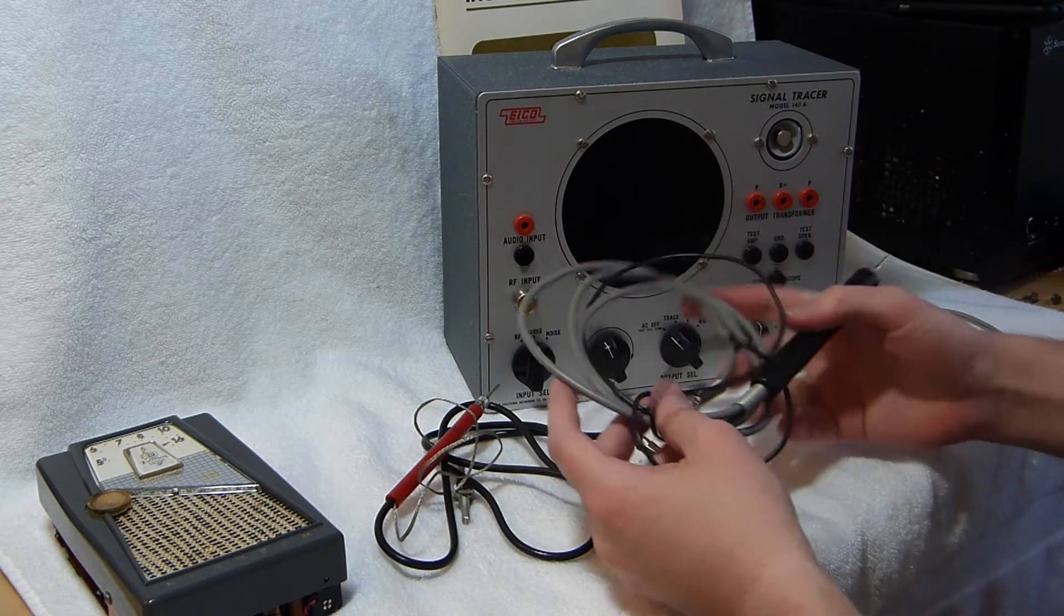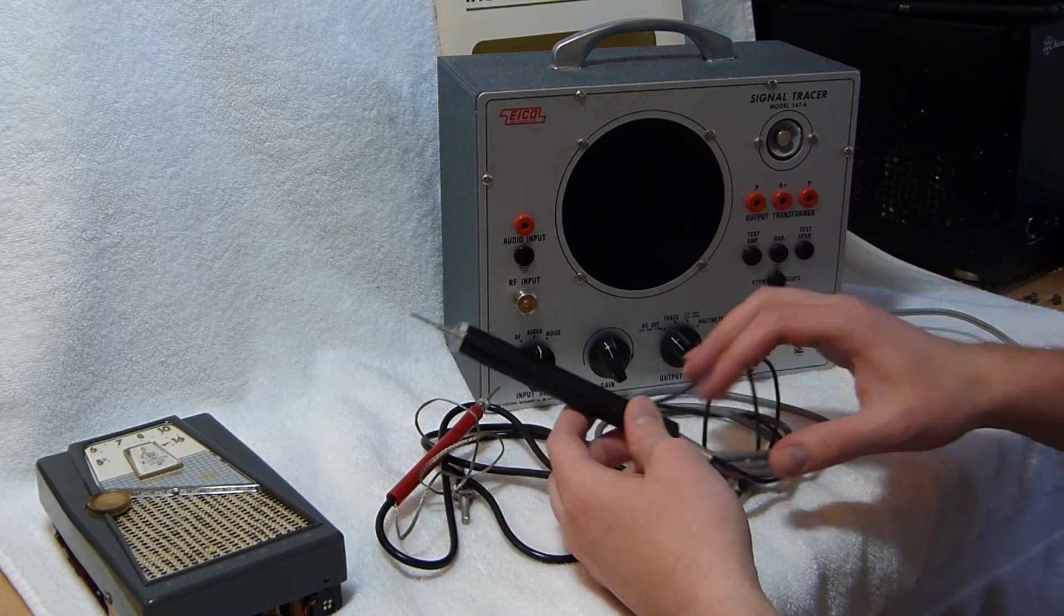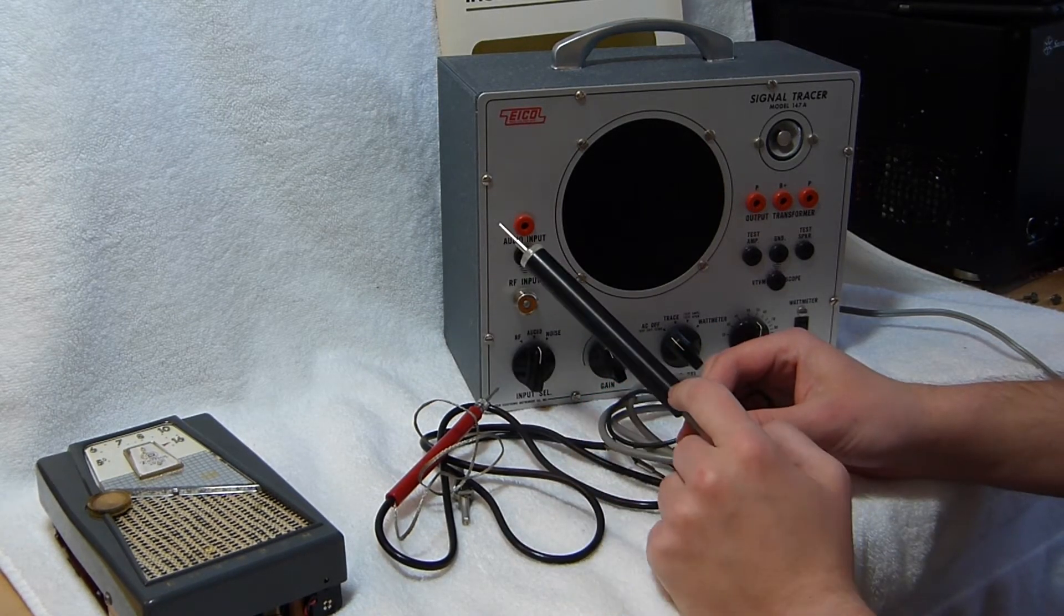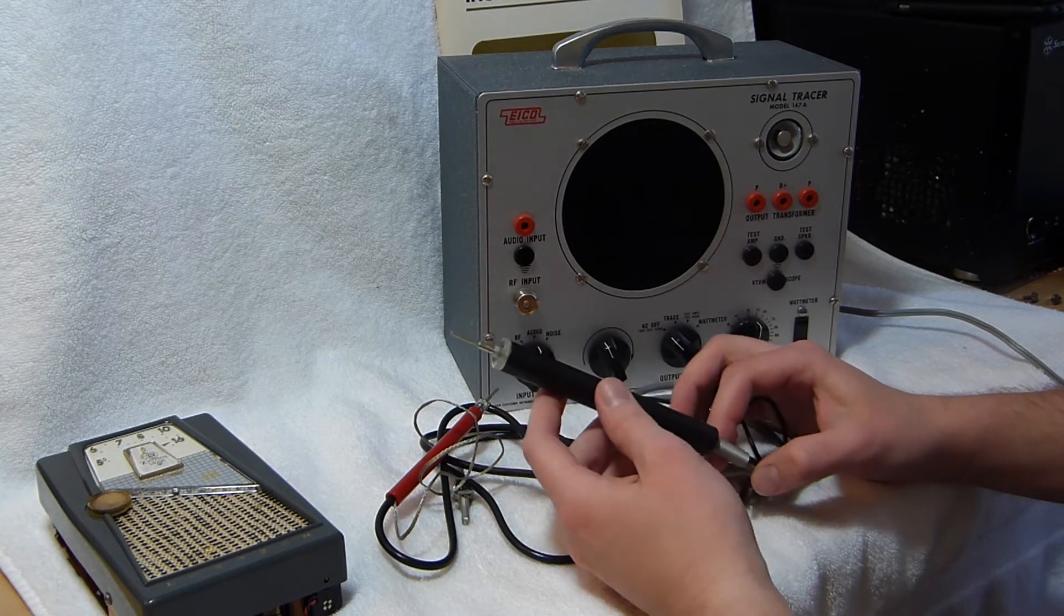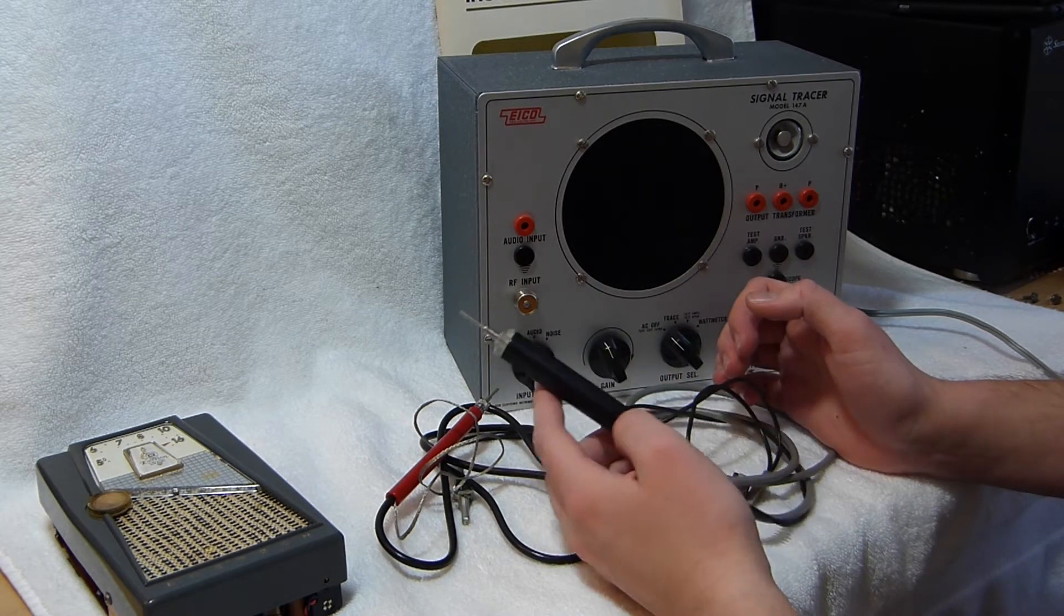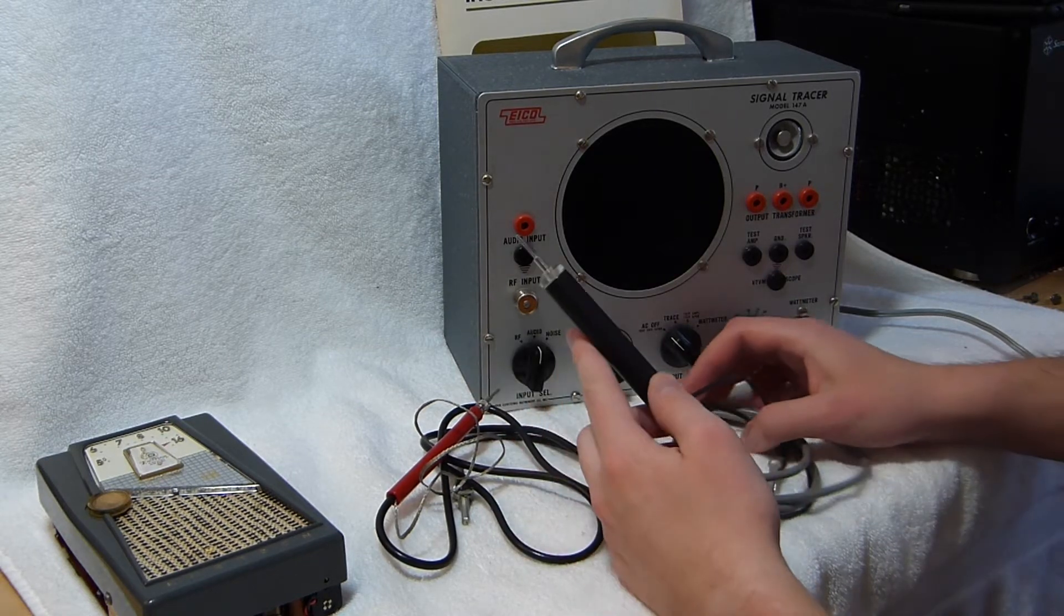It comes with both of the probes. The only thing I've done so far to this thing is re-solder the connection to the shield and to the tip there. Whoever built this used a pencil soldering iron that didn't get hot enough to make a good connection, so I redid that.